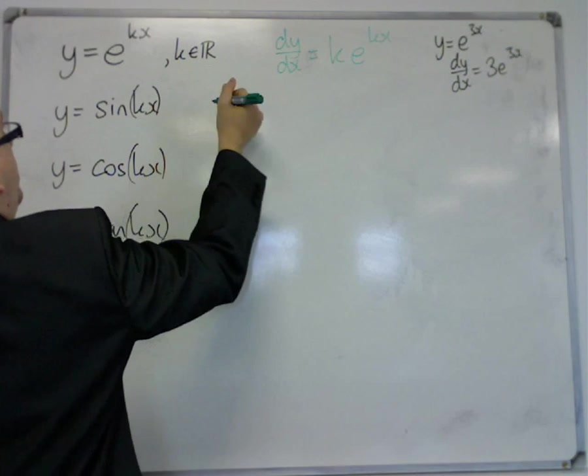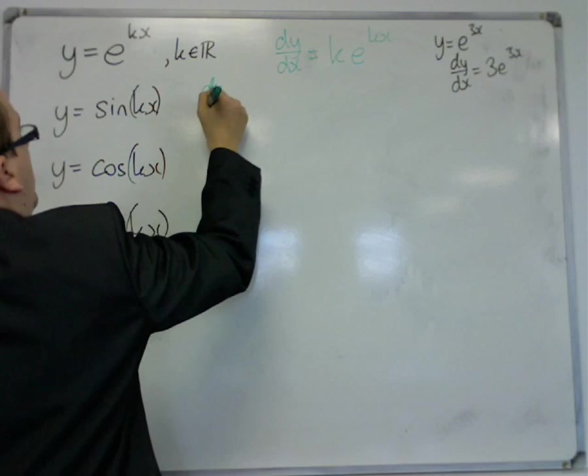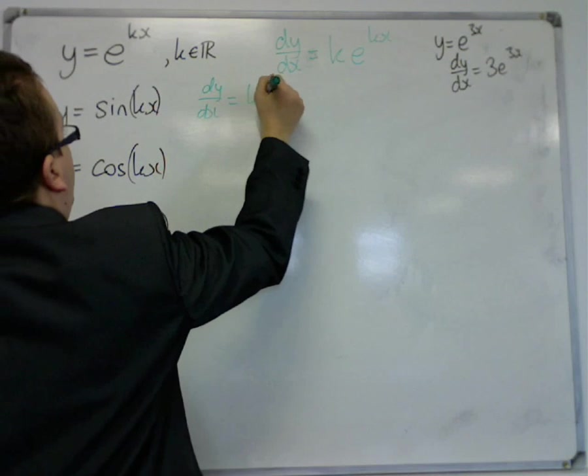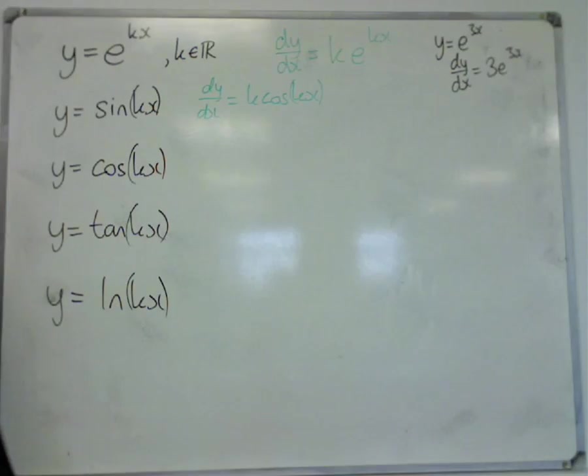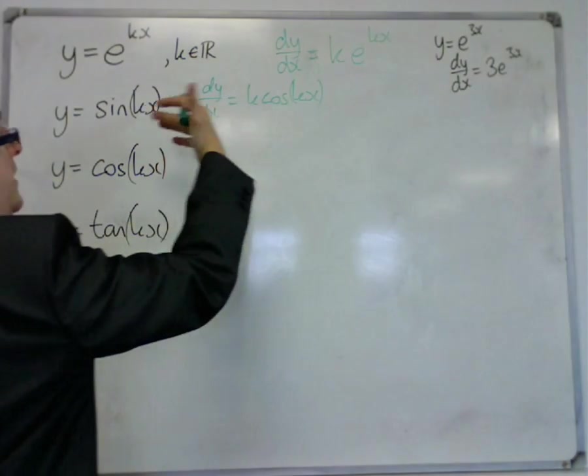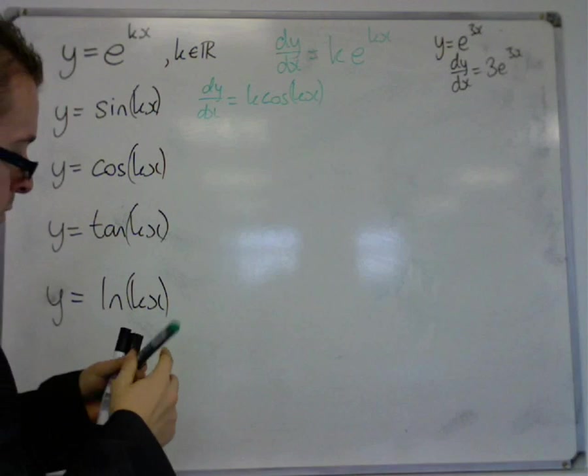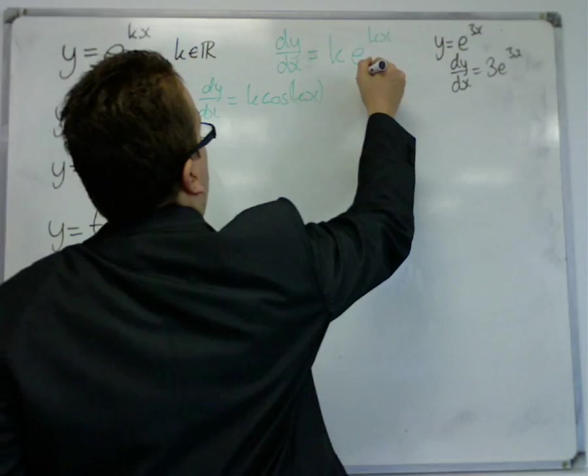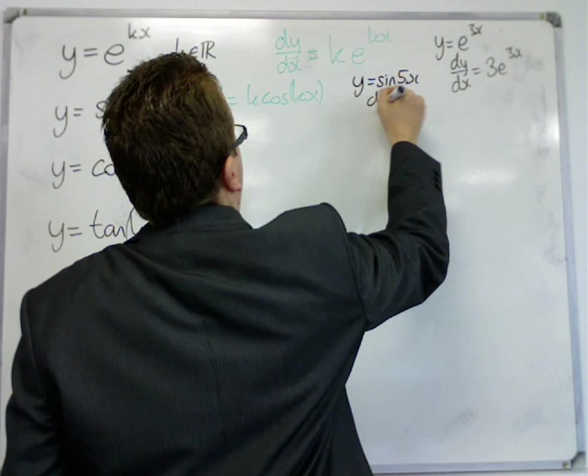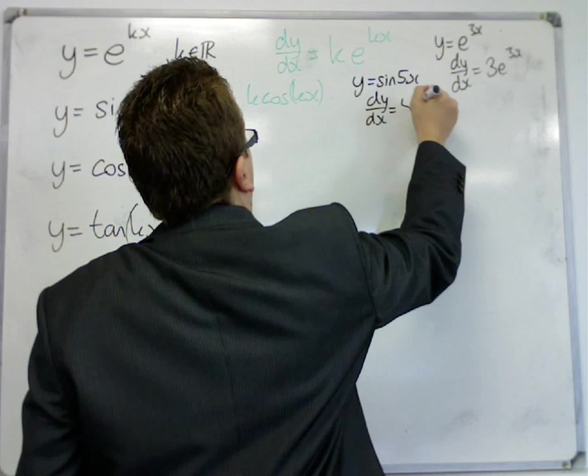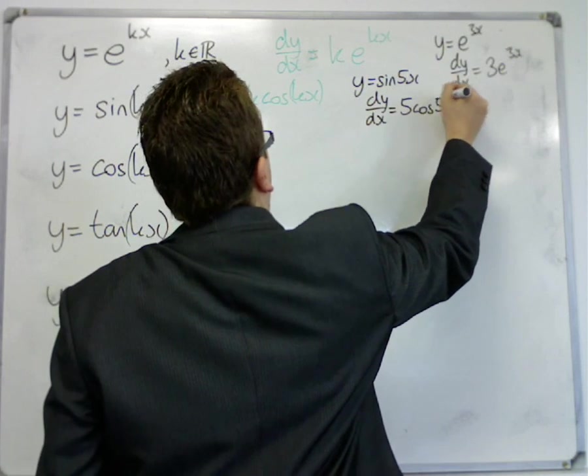y equals sine kx, dy by dx is k cosine kx. Sine differentiates to cos, and the derivative of what's inside comes outside. So, in other words, as an example, y equals sine of 5x differentiates to 5 cos 5x.